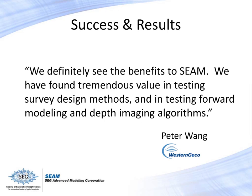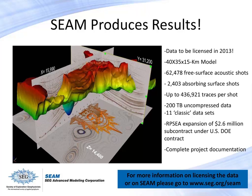SEAM produces results: data to be licensed in 2013; a 40x35x15 km model; 62,478 free surface acoustic shots; 2,403 absorbing surface shots; up to 436,921 traces per shot; 200 terabyte uncompressed data; 11 classic data sets; RPSEA expansion with a $2.6 million subcontract under US DOE contract; and complete project documentation. For more information on licensing the data or on SEAM, please go to www.seg.org/SEAM.